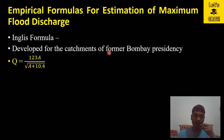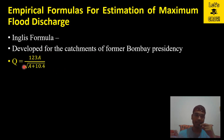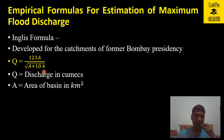The next formula is the Inglis formula, developed for the catchments of the former Bombay Presidency. The formula is Q = 123A / √(A + 10.4), where Q is discharge in cubic meters per second and A is area in square kilometers.